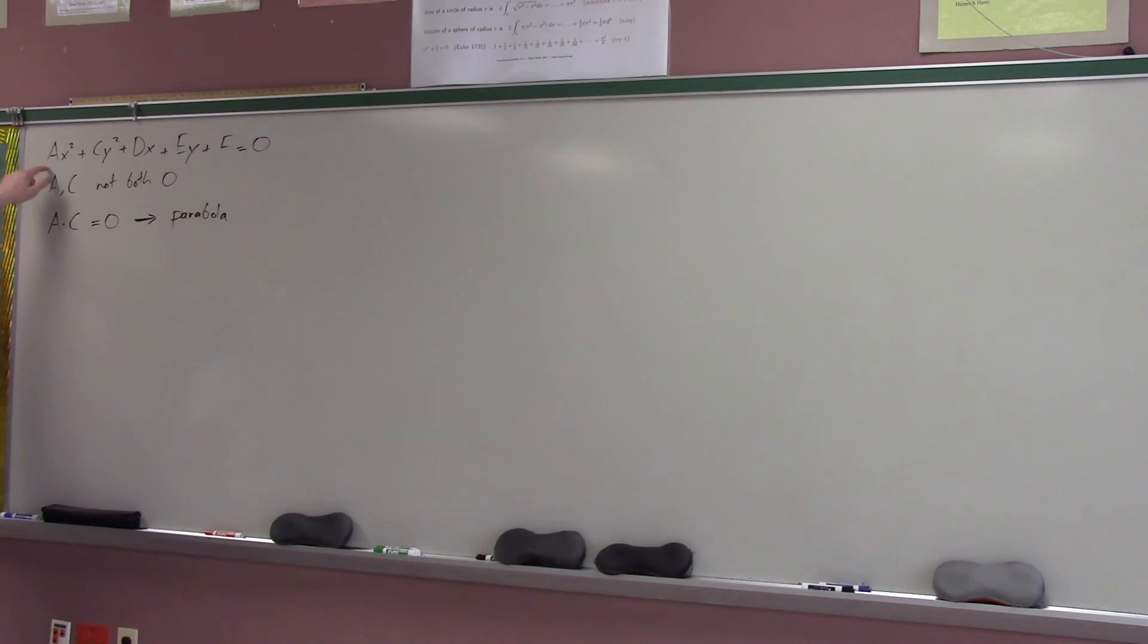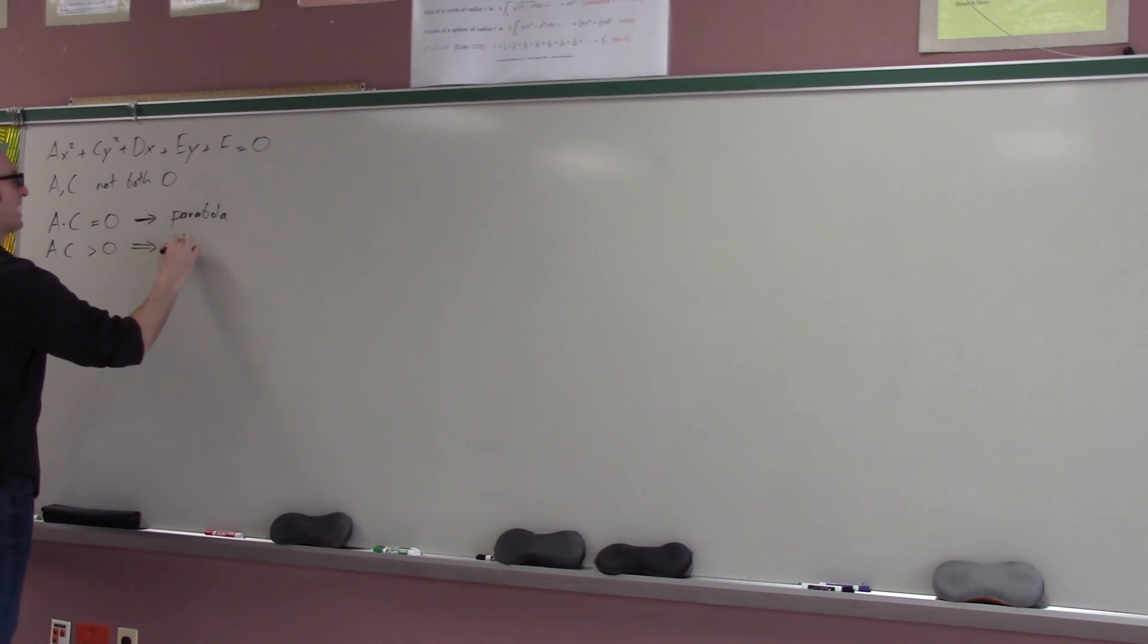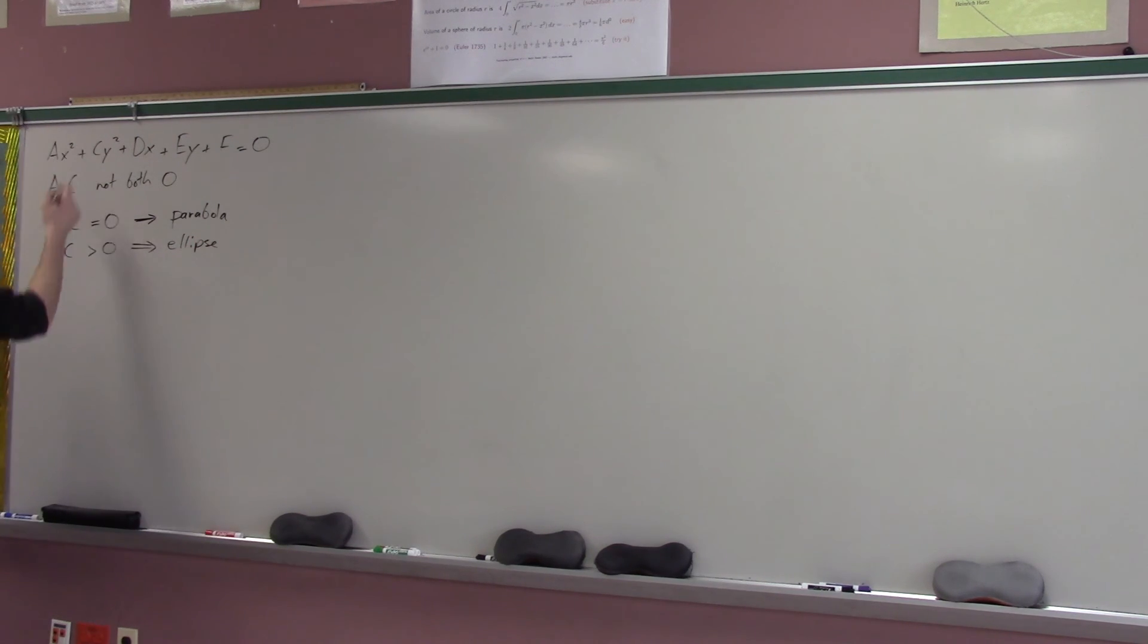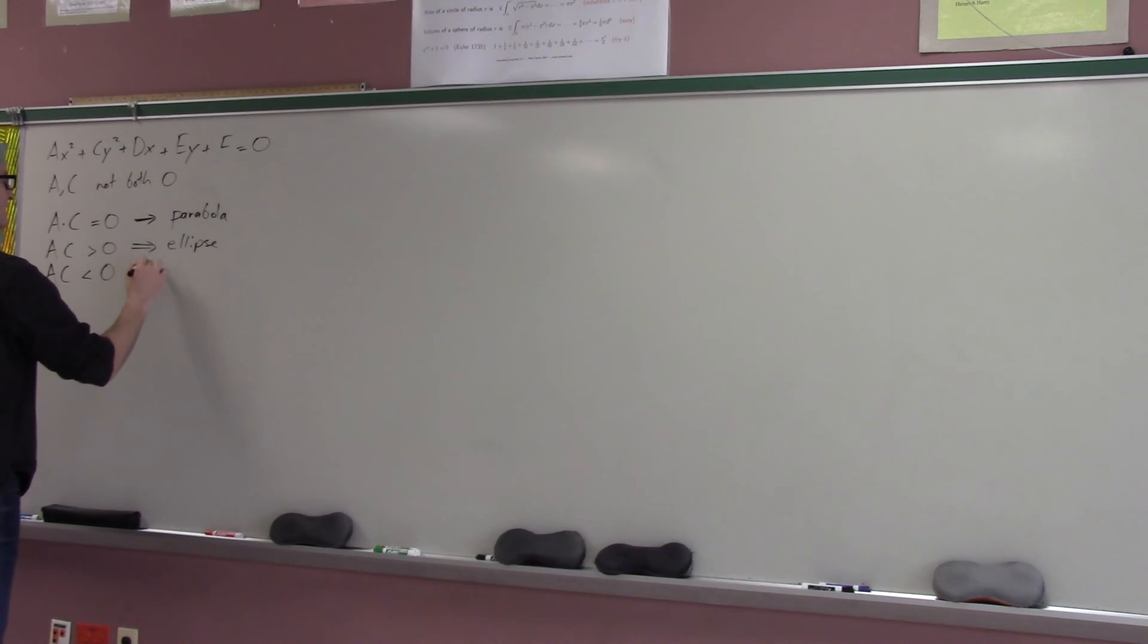And if a and c are both positive, then it's an ellipse. But if they're both negative, it's also an ellipse, because if they're both negative, then you could just move them both over to the other side. So the cool way of saying this is that if the product of a and c is positive, then that's another way of saying that a and c have the same sign, then it's guaranteed to be an ellipse. And if a and c have different signs, so the product of a and c is negative, then it's a hyperbola.